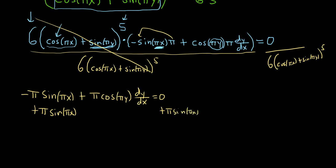And then so on the left, this cancels. So we have π cosine πy dy/dx equals this stuff over here. So π sine πx.